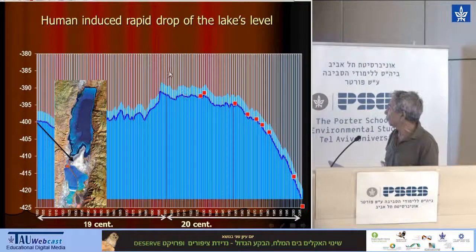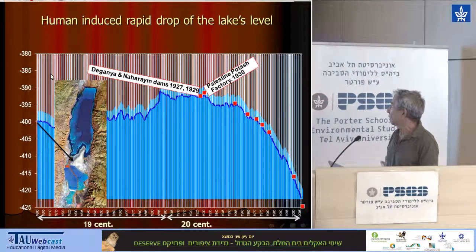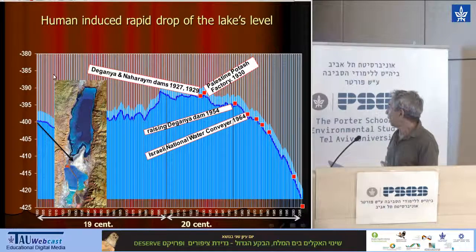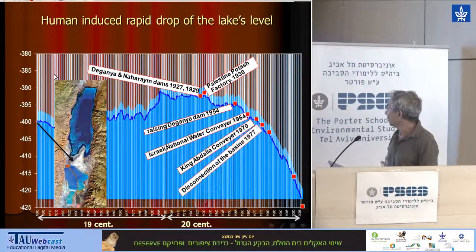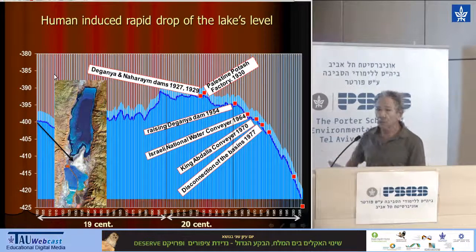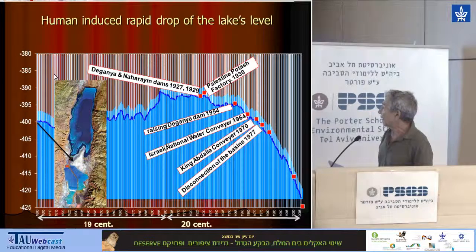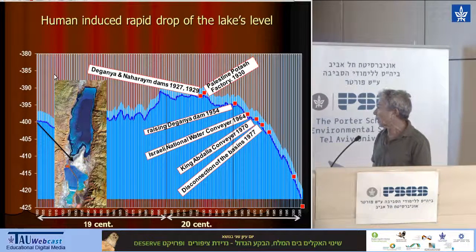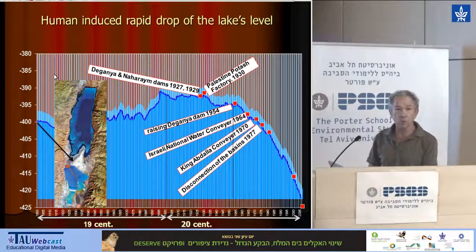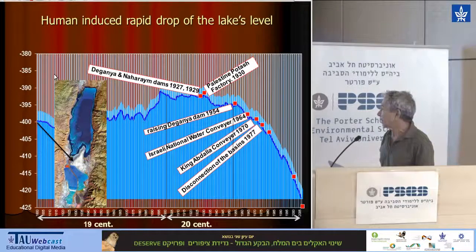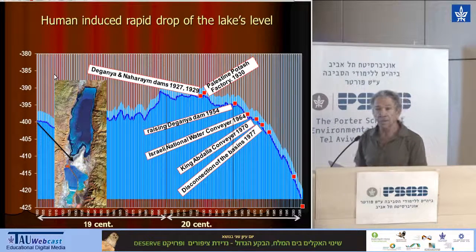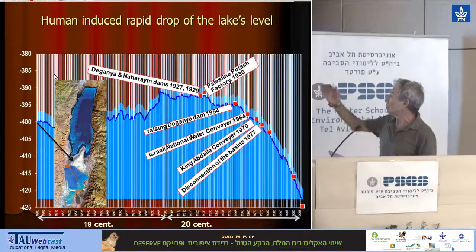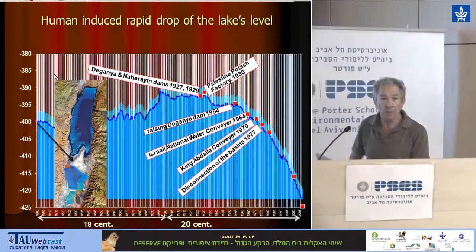But soon after, men arrived and started to interfere in the water balance of the Dead Sea. Here you can see landmarks in the historical interference. In 1977, there was a disconnection between the two basins because the level dropped to 400 meters minus. But unlike in the past, the industry decided to take advantage of drying out the southern basin and turn it into an evaporation pond in order to increase production. The Dead Sea lost its buffer and water is now pumped from the northern basin to the southern one, despite the already very low level.